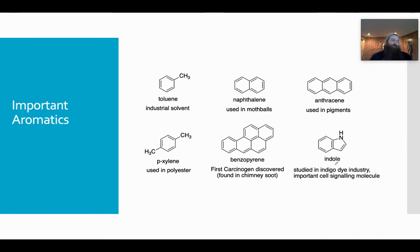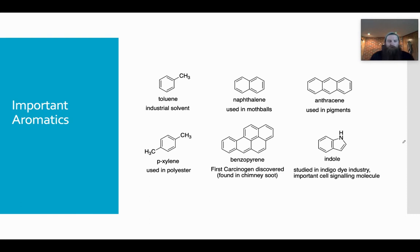Here are some important aromatics. Toluene is a really important solvent — not nice for organic living things, but great as an industrial solvent. Naphthalene is the active ingredient in mothballs. Anthracene is used in pigments. Xylene is used in polyester — you've probably seen that on a tag listing the components of a fabric. Benzopyrene was the first carcinogen ever discovered — found in chimney soot. And the indole ring is actually really important in organic chemistry — it's a great platform to build things on, as are anthracene and naphthalene.